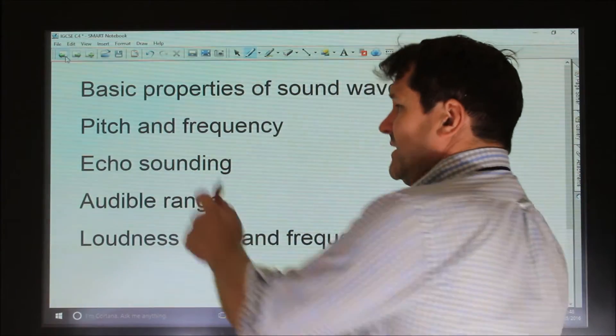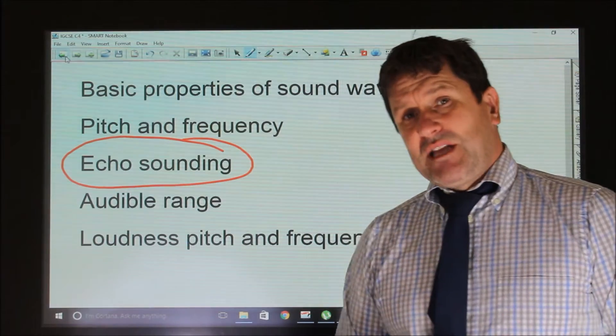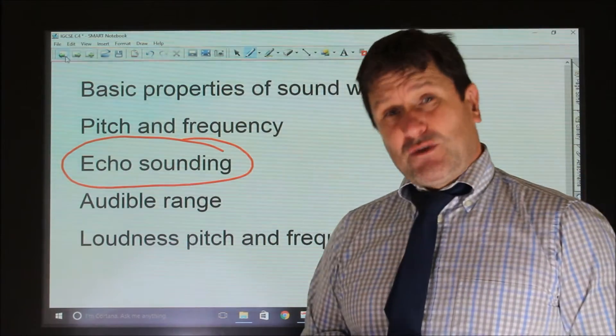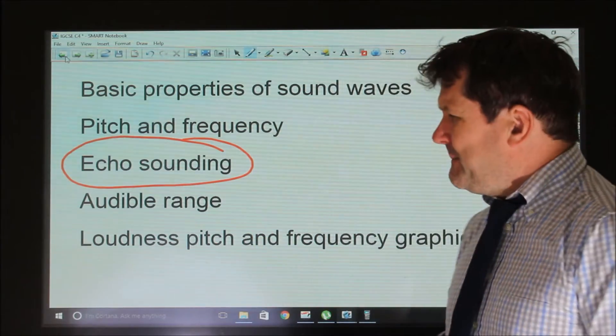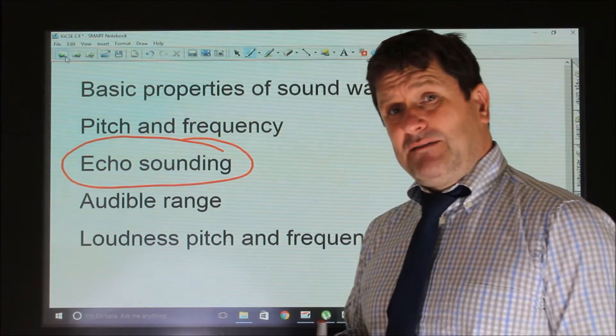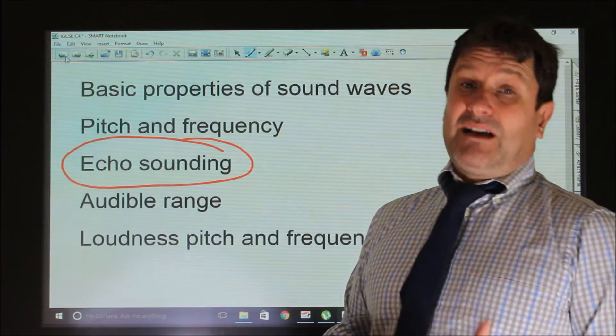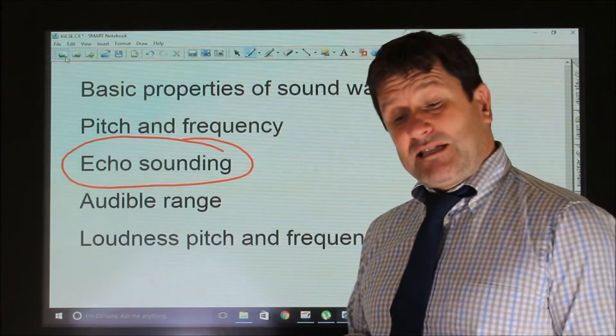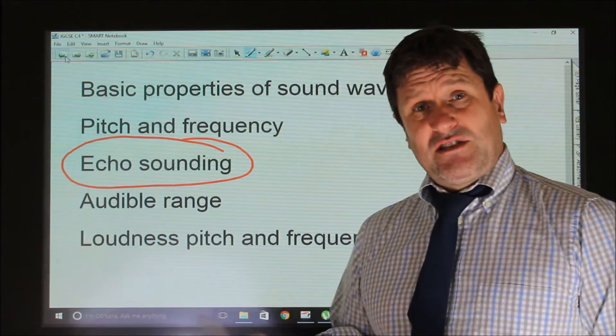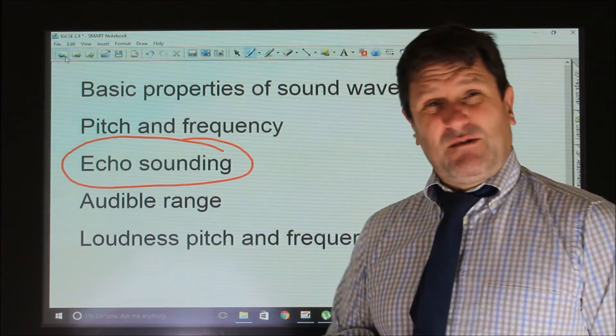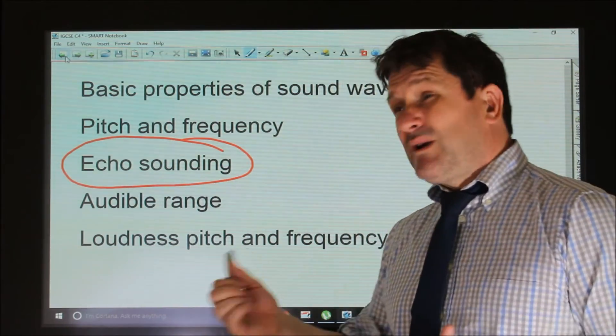Before I go on to echo sounding, I just want to talk about the audible range. So humans can hear vibrations from 20 to 20,000 hertz. If something vibrates 20 times per second, that's the lowest, deepest sound that a human can hear. Humans can hear right up to 20,000 hertz. Now you will have done experiments in class to see that as the frequency of a sound wave has increased, the old teachers amongst us, our sound disappears around 17,000 hertz, whereas a student's sound doesn't drop off until 20,000 hertz.